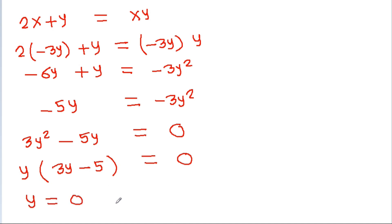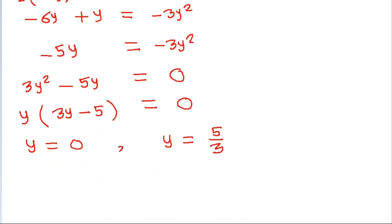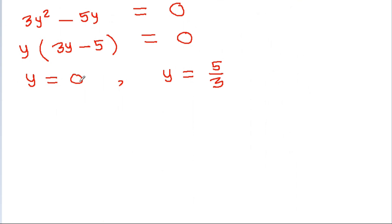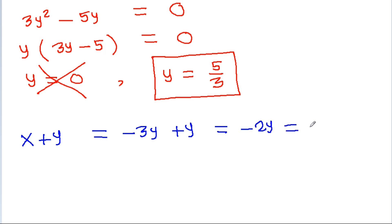And if we take y common, then we will get y times (3y minus 5) is equal to 0. So y is equal to 0, or y is equal to 5 by 3. Since we have given that x and y are non-zero, y is equal to 5 by 3. And we have to find the value of x plus y. x plus y is x plus y, and x is minus 3y, so x plus y equals minus 3y plus y equals minus 2y, which is minus 2 times 5 by 3. So it is minus 10 by 3.